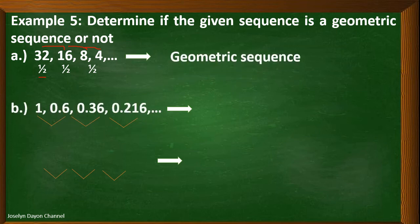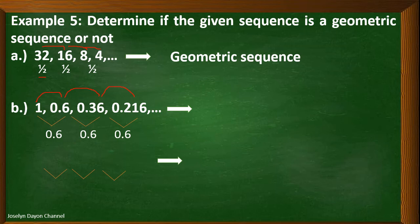Second: 0.6 divided by 1 is 0.6; 0.36 divided by 0.6 is also 0.6; and 0.216 divided by 0.36 is also 0.6. We have a common ratio, therefore the second example is a geometric sequence.